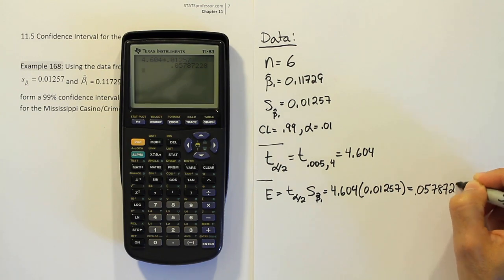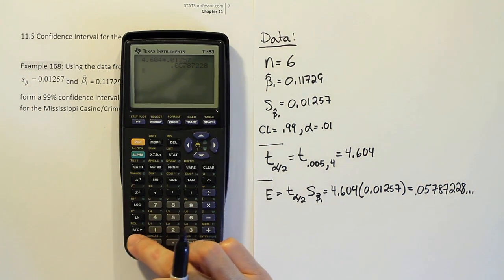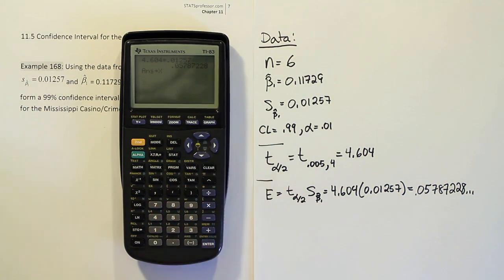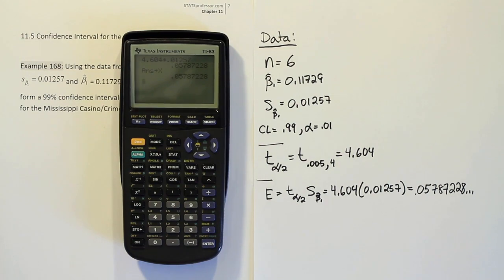Alright, so we get the result 0.05787. And then I'm just going to do 228 and do dot, dot, dot. So I put the full number in there. In my calculator, I'll store that so I have it for later. And that way I can use it and call it up in a moment when I need it.